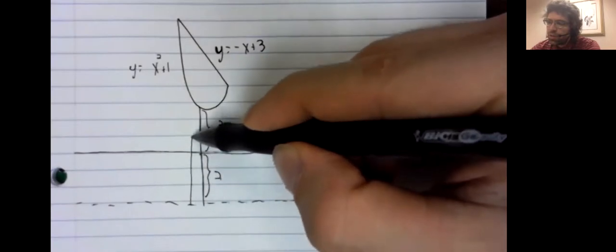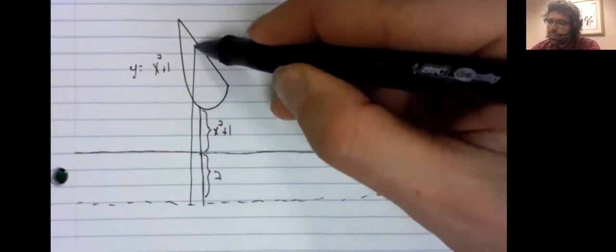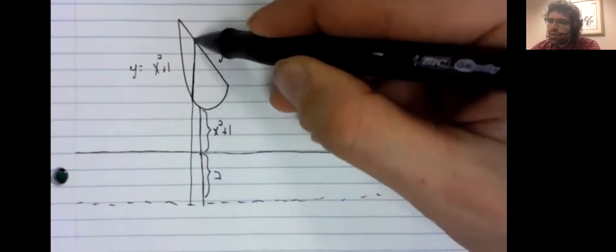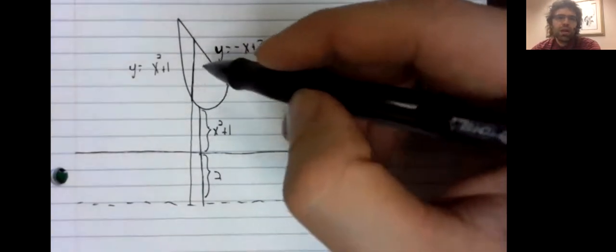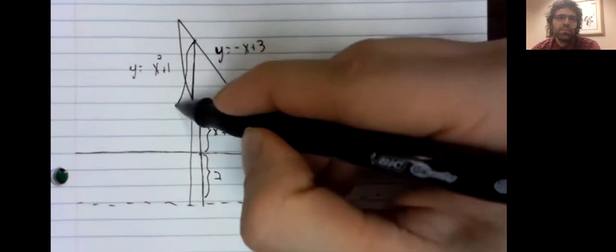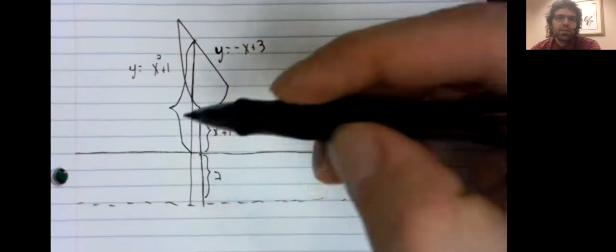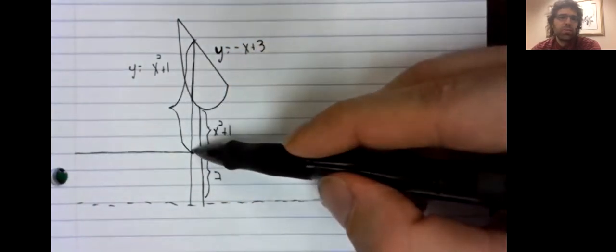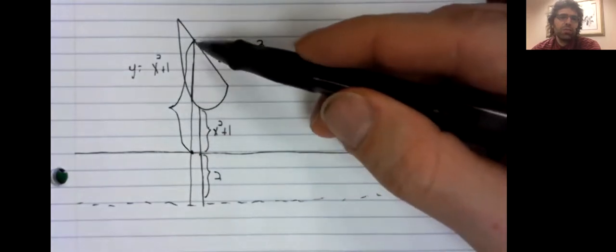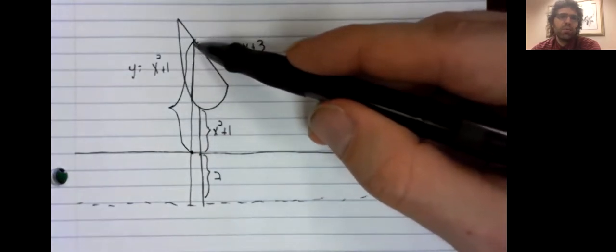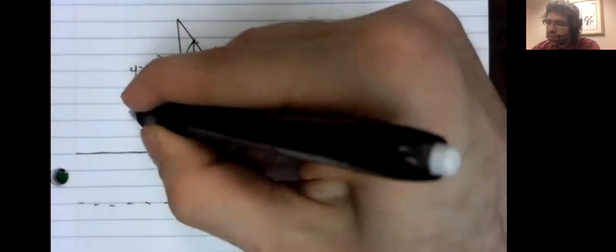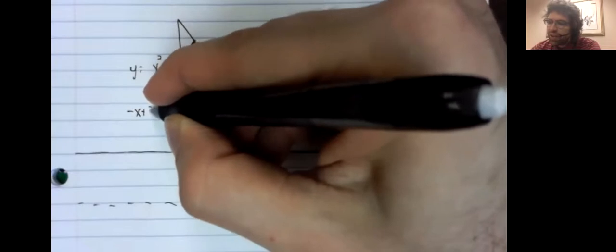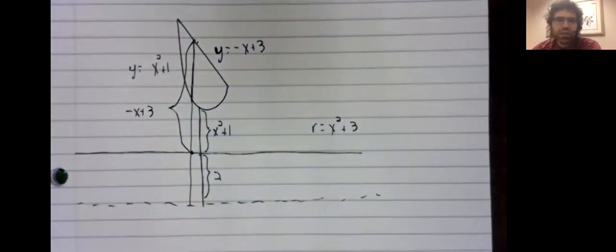Now we go all the way up through the region and out the other side. The distance from y equals zero to y equals negative x plus three.